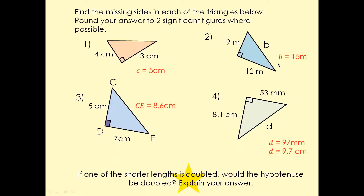For question three, we add 5 squared plus 7 squared. 5 squared is 25 and 7 squared is 49, giving 74. The square root of 74 is 8.6 rounded to two significant figures.